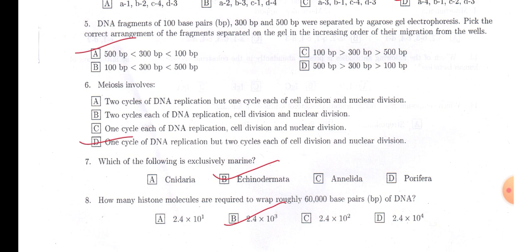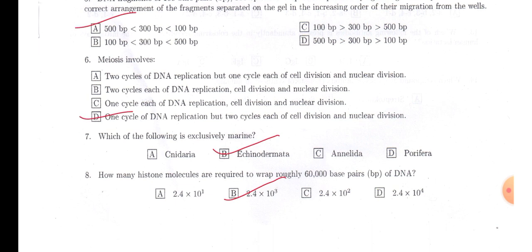Next question, meiosis. A very easy question. We know that in meiosis there is only one time replication of DNA, but two cycles of cell division and nuclear division occur. That is why meiosis is divided into meiosis one and two, creating total four daughter cells from only a single parental cell.